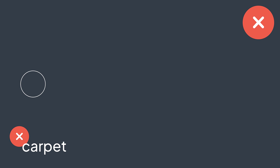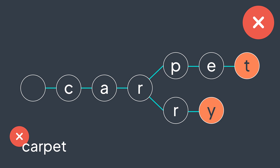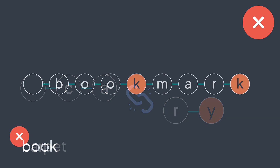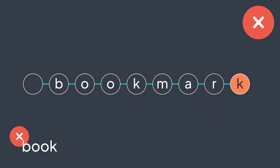Another special case is when one of the nodes we want to delete has other children. For example, with 'carpet' and 'carry', if we delete 'carpet' we delete T, E, P — but we cannot delete R because it has children; deleting it would also delete 'carry'. The third special case is when the last node of the string has children. For example, with 'book' and 'bookmark', to delete 'book' we reach K, set isEnd to false, but we can't delete any node — we would lose 'bookmark' otherwise.